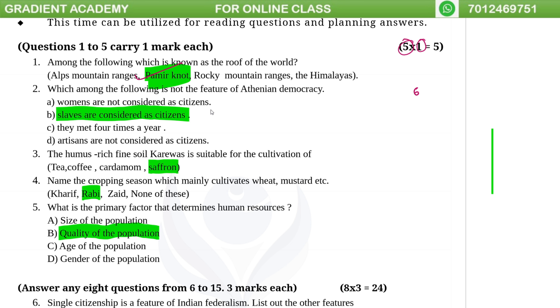If you have one question, you can't read the answer. Which among the following is not a feature of Athenian democracy? Athenian democracy — slaves were not considered citizens.